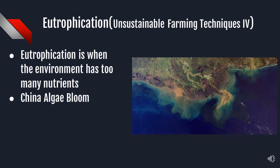Eutrophication is when the environment has too many nutrients or is too healthy. The main cause of eutrophication is when fertilizers leak into environments. In 2007, 2 million residents of China couldn't access water due to an algae bloom, a result of eutrophication.